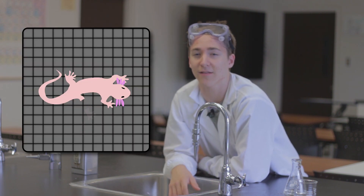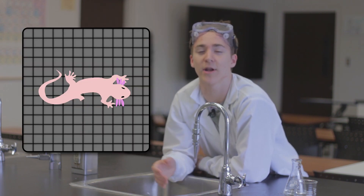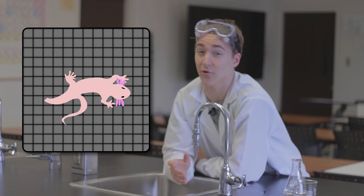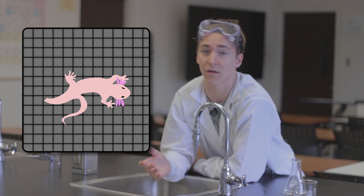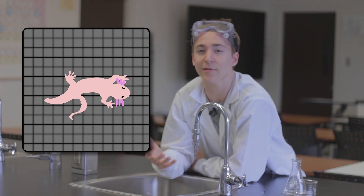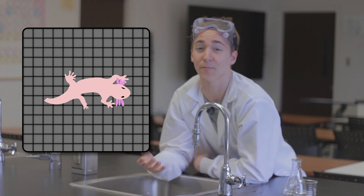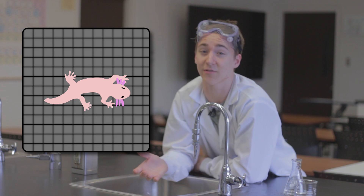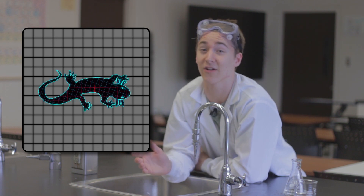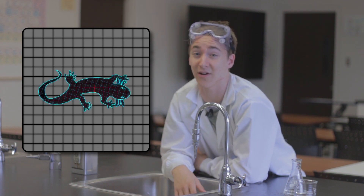But it gets even weirder when animals regenerate limbs. If you cut the arm off an axolotl — a regenerating salamander — and put a tail where the arm used to be, the tail will slowly morph into an arm as the bioelectric signals tell the cells that an arm is meant to be there, not a tail.